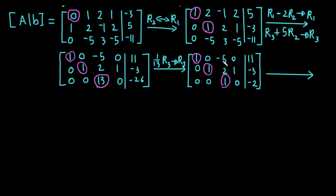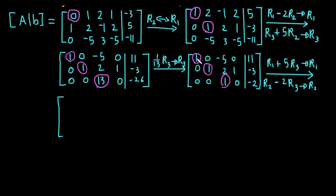We need to make the entries above the leading 1 in row 3 equal to zero. We have -5 in row 1, so we add 5 times row 3 to row 1: row 1 plus 5 times row 3 goes to row 1. For row 2, we have 1, so we subtract 2 times row 3: row 2 minus 2 times row 3 goes to row 2. Computing row 1: 1 + 5×0 = 1; 0 + 0 = 0; -5 + 5×1 = 0; 0 + 0 = 0.